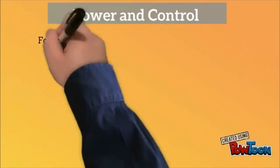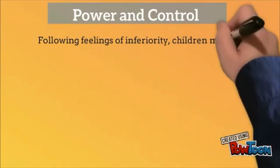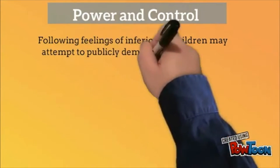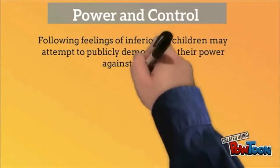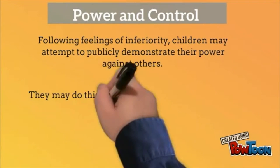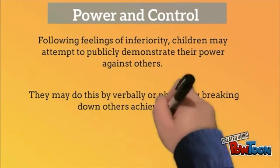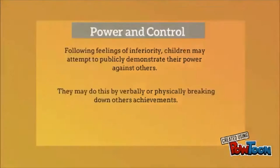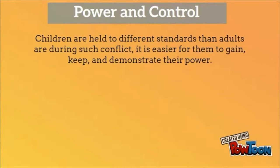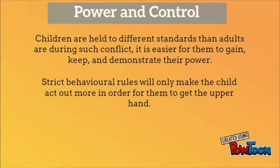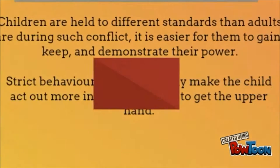For power and control, students will follow feelings of inferiority and may attempt to publicly demonstrate their power against others. Students may do this by verbally or physically breaking down others' achievements. Children are held to different standards than adults during such conflict, so it's easier for them to gain, keep, and demonstrate their power. Strict behavior rules will only make the children act out more so that they get the upper hand.